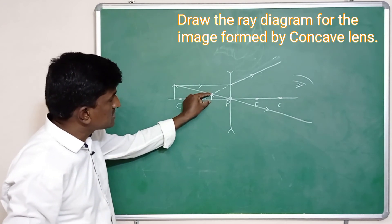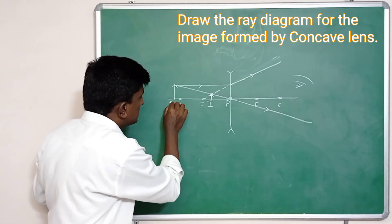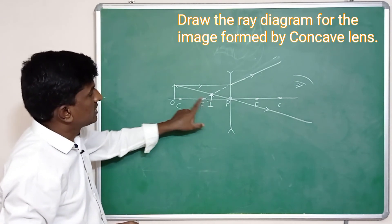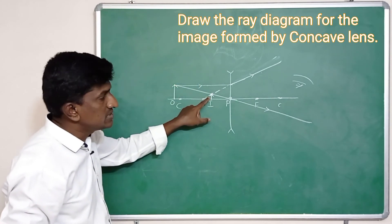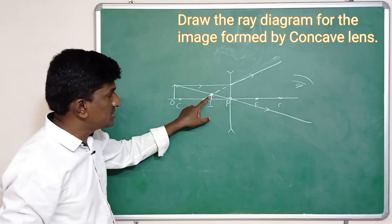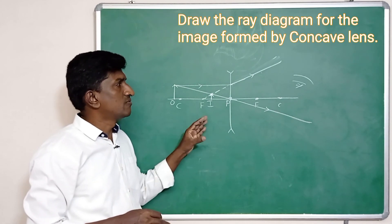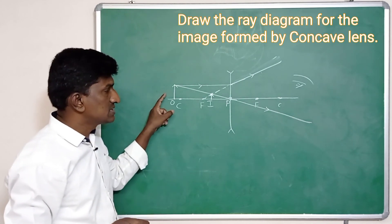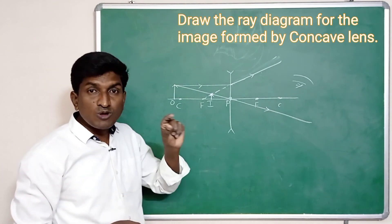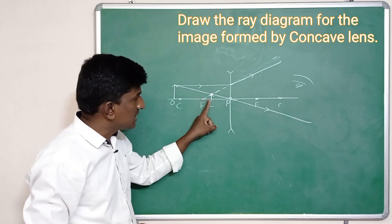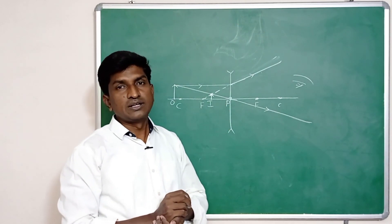The size of the image is diminished — smaller than the object. The image is erect, above the principal axis, and it is a virtual image, meaning it cannot be caught on the screen. A concave lens always forms a diminished, virtual image in between the focus and the optical center. This is about the image formed by the concave lens and the ray diagrams. Thank you.